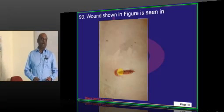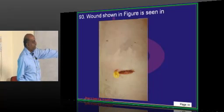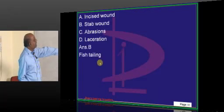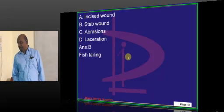Now, you are seeing a wound. What is this basically called? It is called fishtailing of the wound. It is like a fishtail. Fishtailing of the wound is the nature of a stab wound.